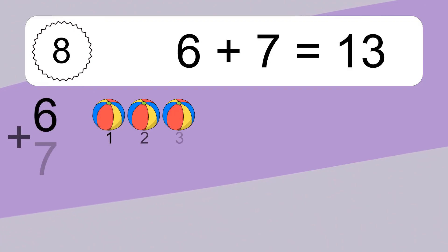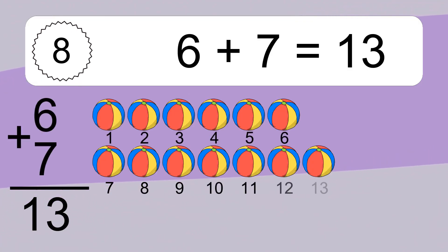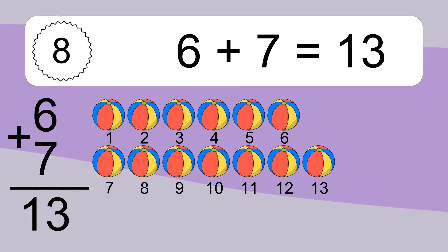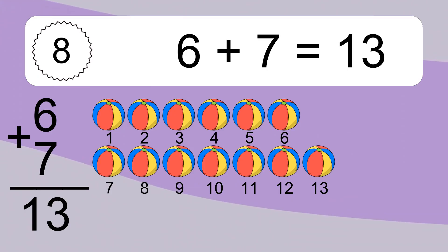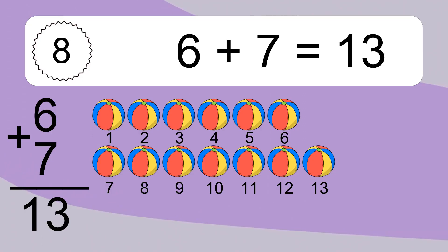6 plus 7 equals what? 6 plus 7 equals 13. Let's count it. 1, 2, 3, 4, 5, 6, 7, 8, 9, 10, 11, 12, 13.